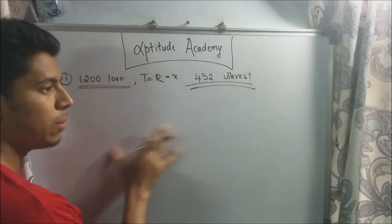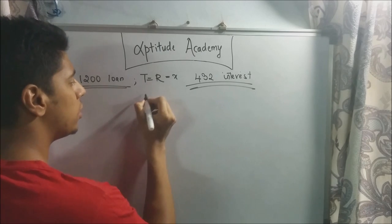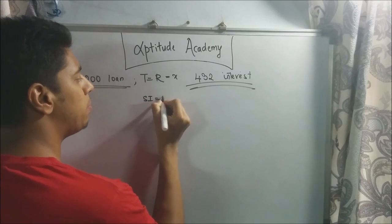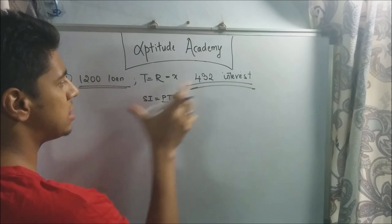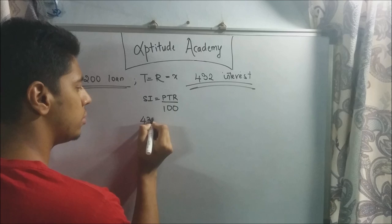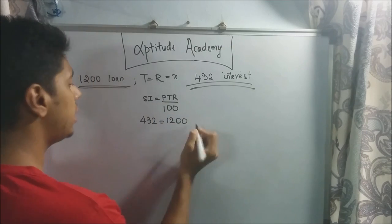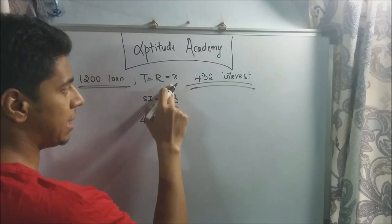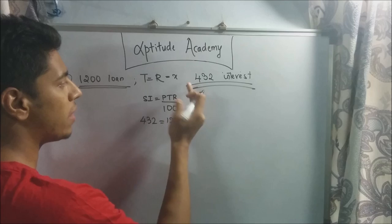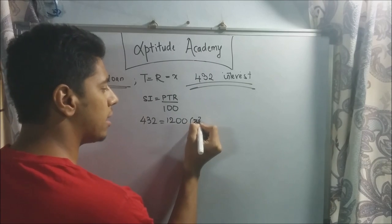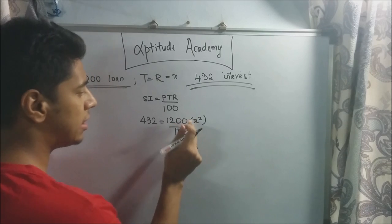The simple interest formula works the same for loan problems. SI is equal to PTR upon 100. They've given us SI as 432 and the principal is 1200. Since time t and rate r are the same, I've assigned them both the variable x, so t into r will be x squared, divided by 100.